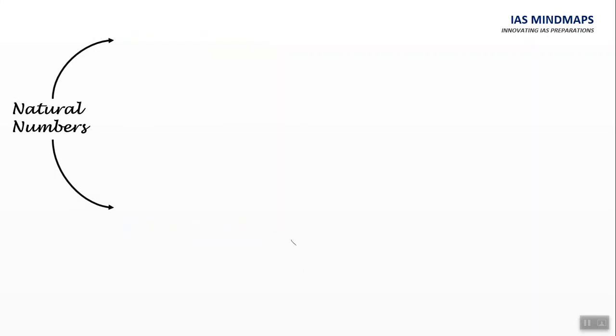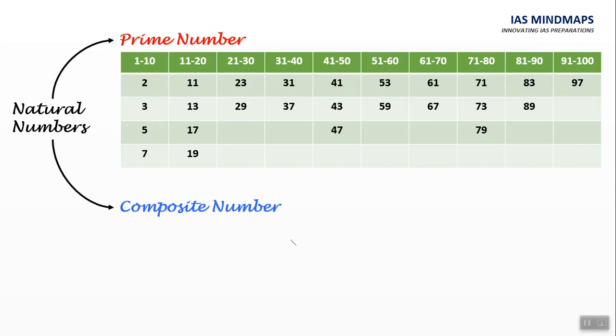Next is natural numbers. These are of two types. First, prime numbers. Second, composite numbers. For example, from 1 to 100, we have these many prime numbers.